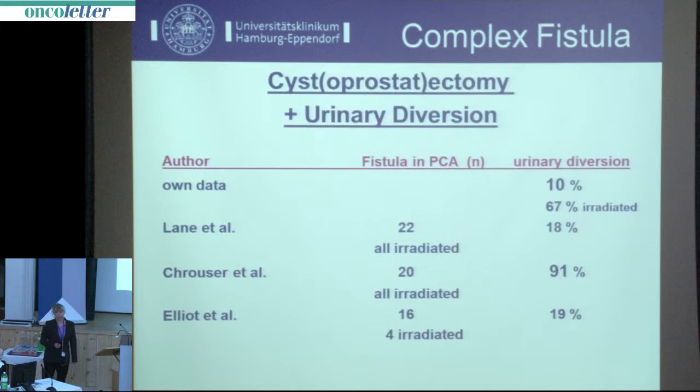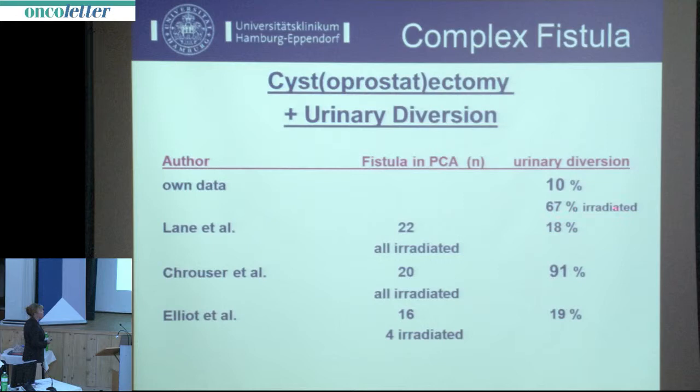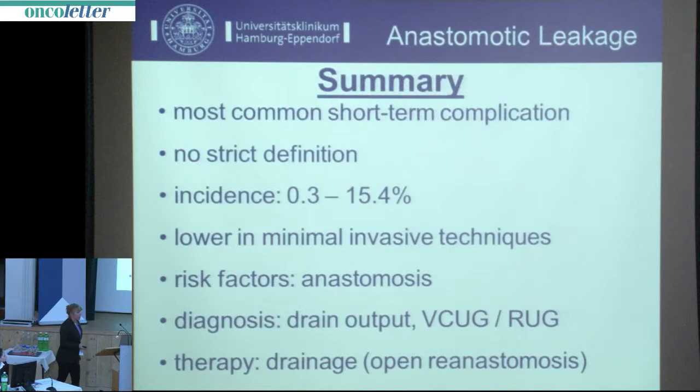How many patients will need urinary diversion? It is difficult to get precise figures. From our own data, around 10 percent overall need a urinary diversion; however, in irradiated patients this rises to around 67 percent. In other studies, depending on the proportion of irradiated patients, the figure is anywhere between 18 and 91 percent.